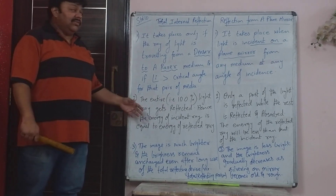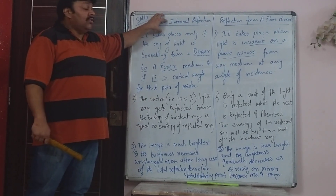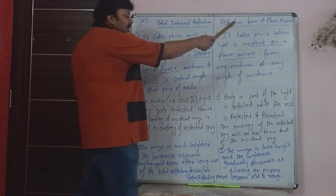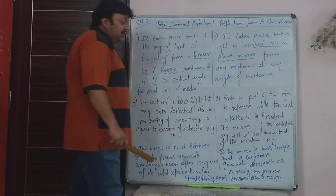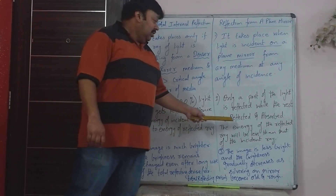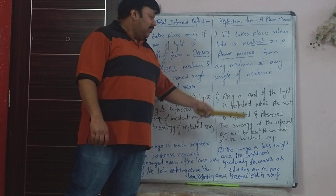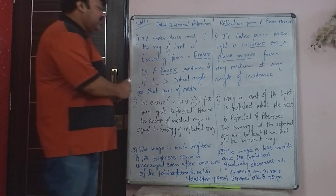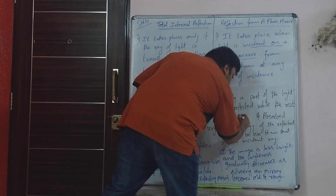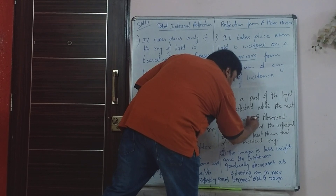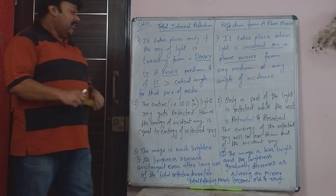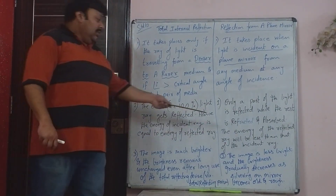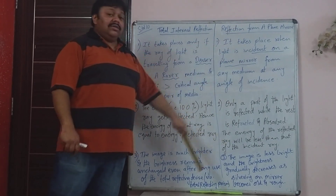Whereas in a total reflecting prism, due to total internal reflection — the word 'total' is there because it is 100% reflection. In case of a mirror, only a part of the light is reflected while the remaining is refracted and absorbed. So the energy of the reflected ray will be less than that of the incident ray — it is not 100%, only a part is reflected.